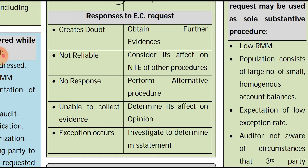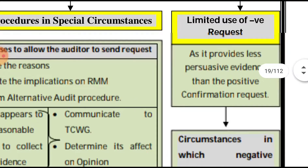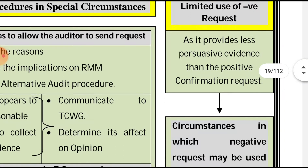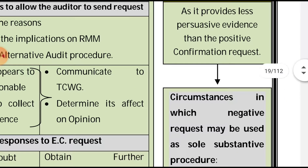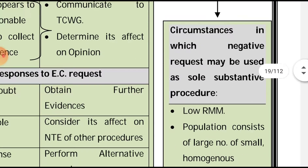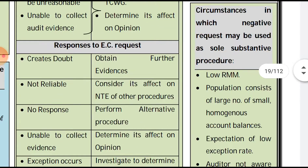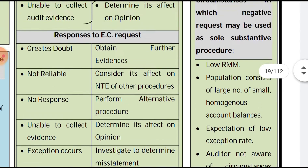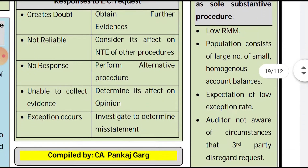The auditor should make limited use of negative confirmation requests because they provide less persuasive audit evidence than positive confirmation requests. Negative confirmation requests may be used as a sole substantive procedure only in four specific circumstances: first, the area assessed has a low risk of material misstatement; second, the population consists of a large number of small, homogeneous account balances; third, there is an expectation of a low exception rate; and fourth, the auditor is not aware of circumstances that would cause the third party to disregard the request.